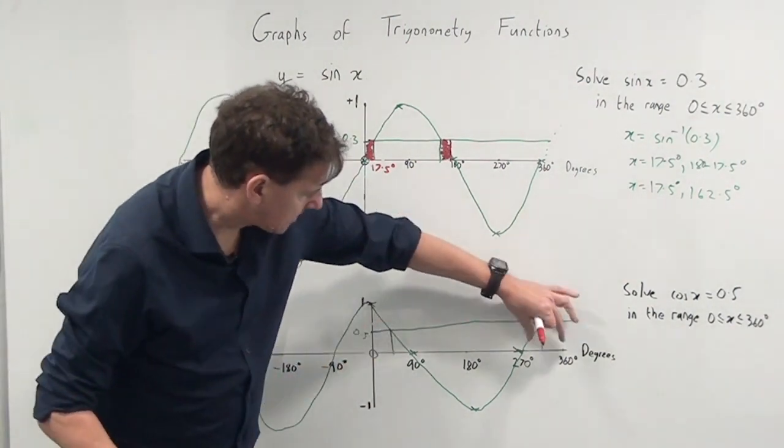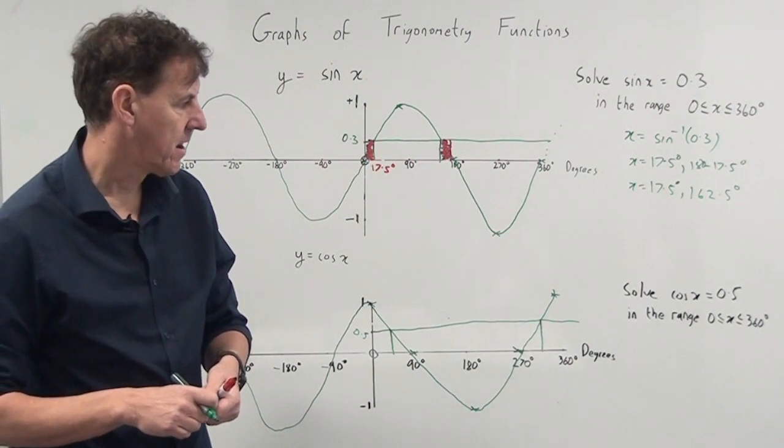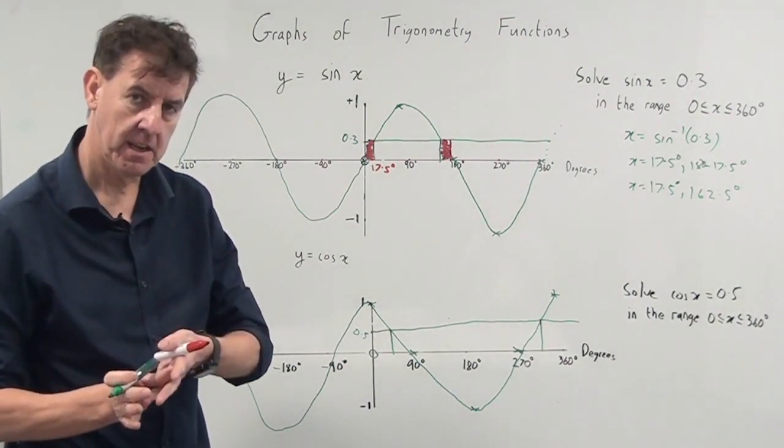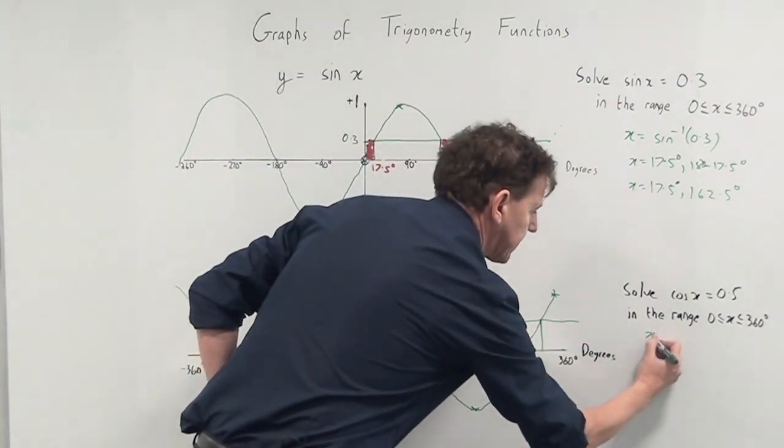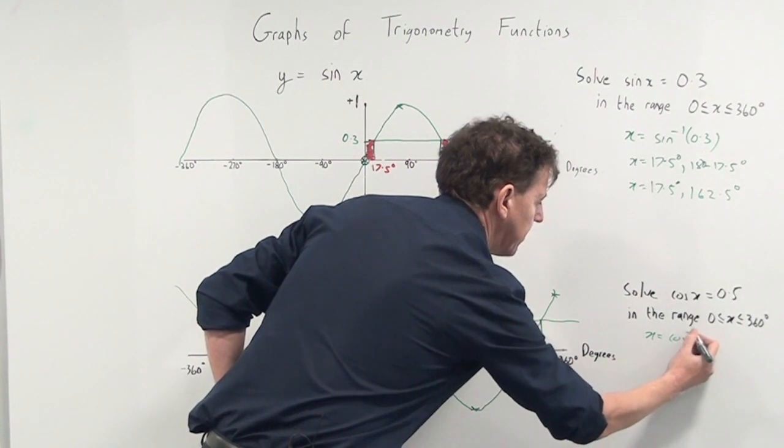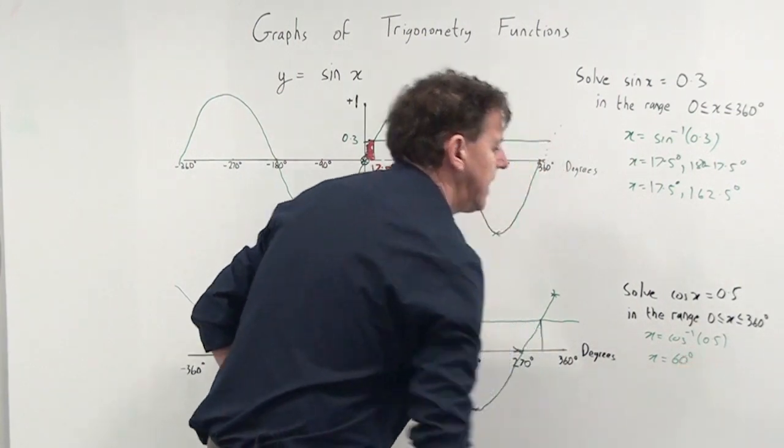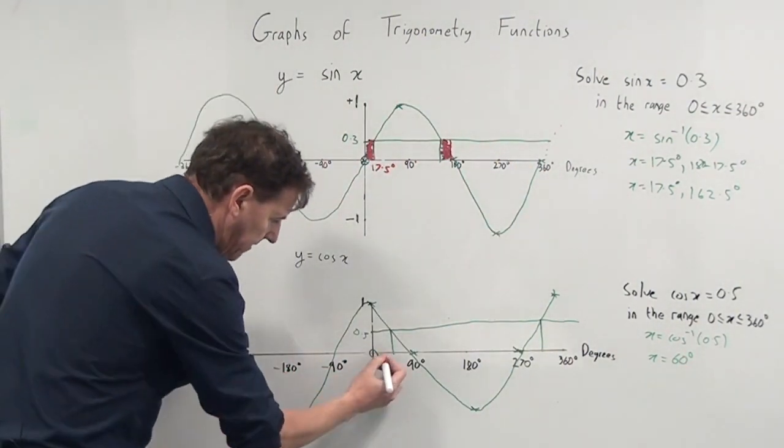So my two answers: one answer I think will be between 0 and 90, one answer will be between 270 and 360 degrees. Remember the technique to get your first answer - you go to your calculator, you press cos inverse of 0.5. So we do x equals cos inverse of that 0.5, and out comes an answer of 60 degrees.